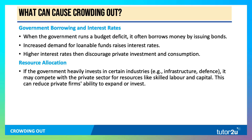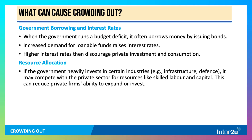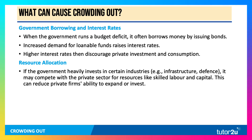But there's also what's called resource crowding out. If the government's pumping money and resources into key industries like infrastructure or defence, for example, it might be competing with the private sector for scarce resources like skilled labour and capital.